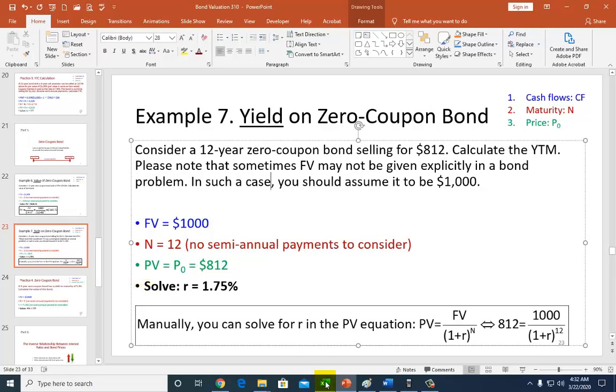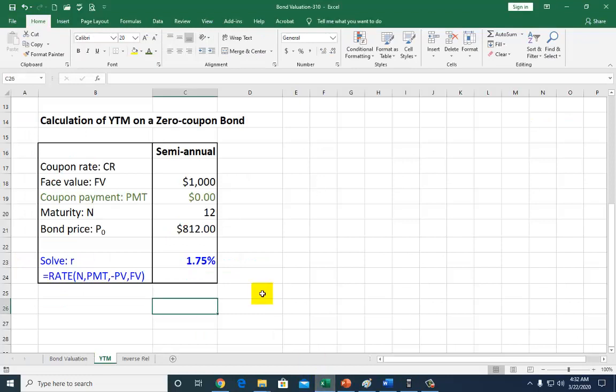And you can also use Excel, although it's an overkill. So, this is the function right here, as I showed earlier. The only difference here is, you're going to make sure that your payment is zero, as you see right here. So, with zero payments, everything else in place, you're going to solve it to be 1.75%.